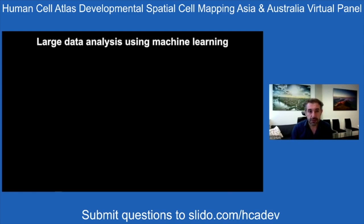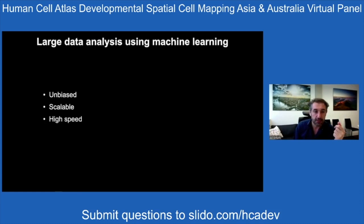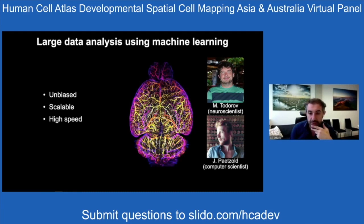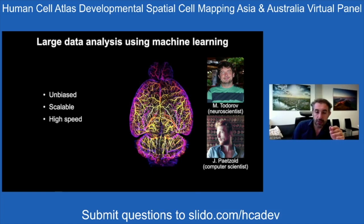Imaging all organs and whole mouse bodies generates a lot of data requiring high-quality analysis. For that, we use machine learning because it's unbiased, scalable, and has really high performance, exceeding human performance in terms of output. For example, we recently published mapping of the whole mouse brain vasculature down to capillary level using tissue transparency and deep learning.